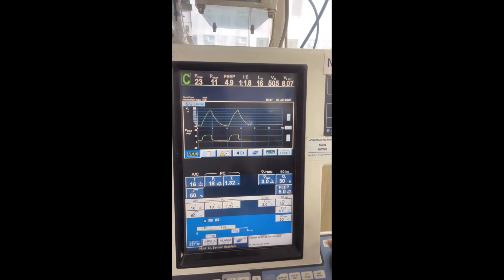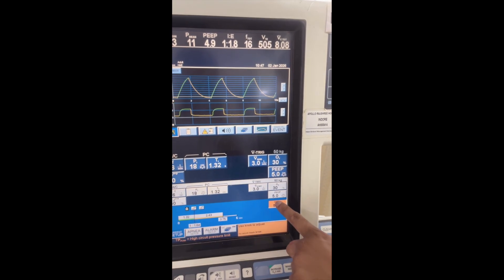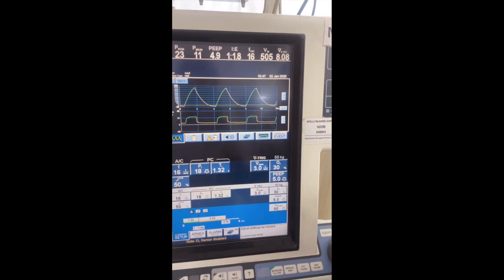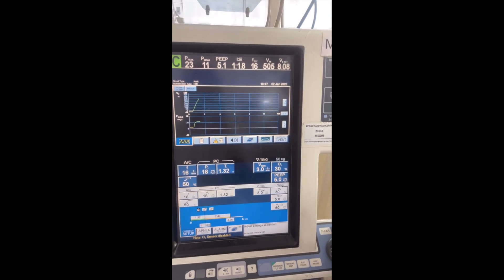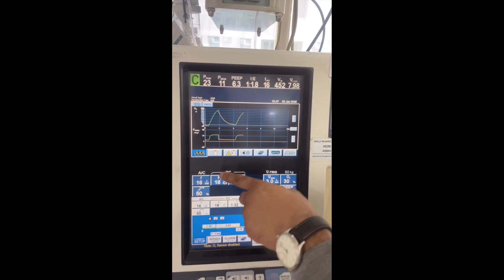And you set the I:E ratio. Based on this, now on this you set the maximum peak pressure. This peak pressure we have set so that it cannot go beyond that.